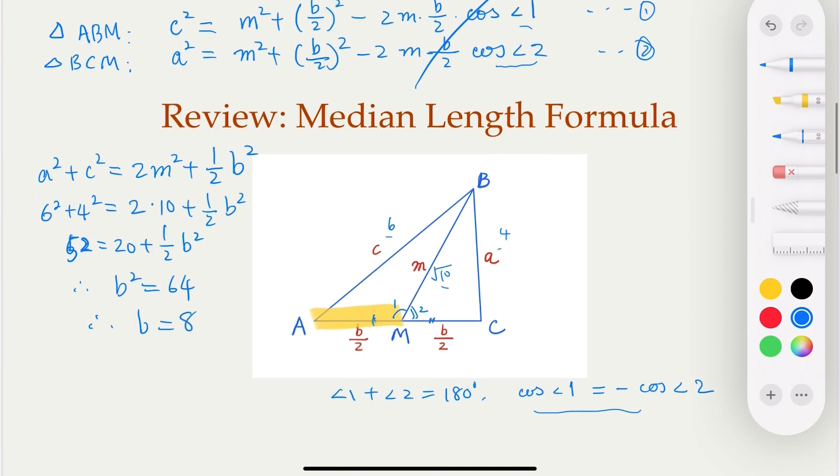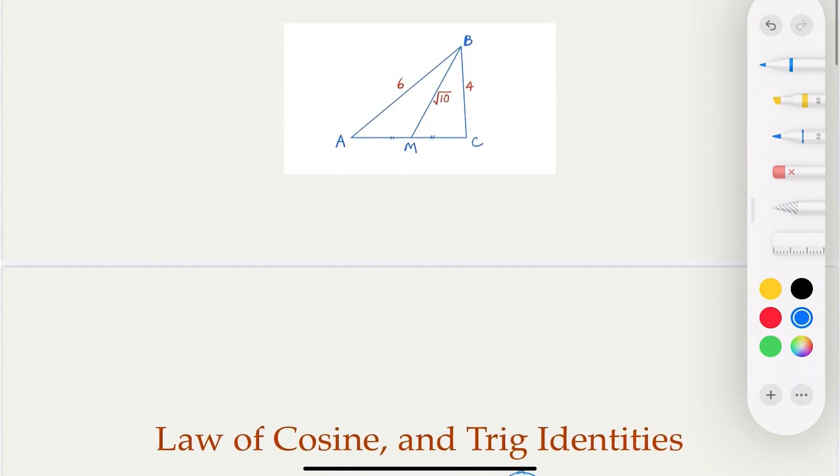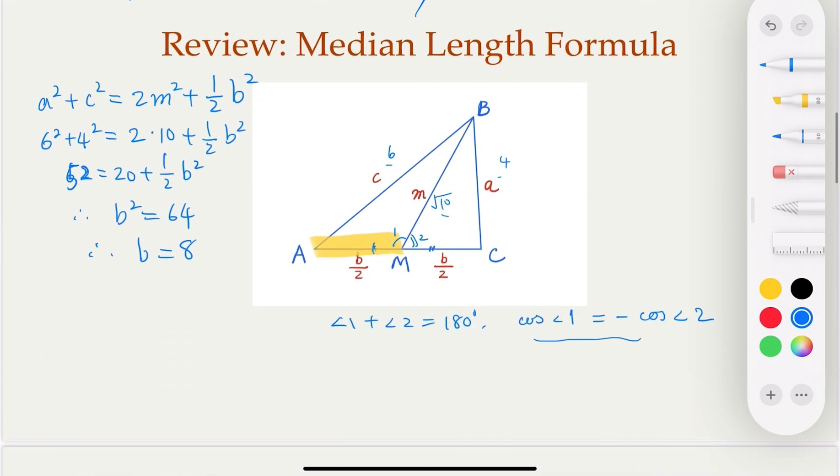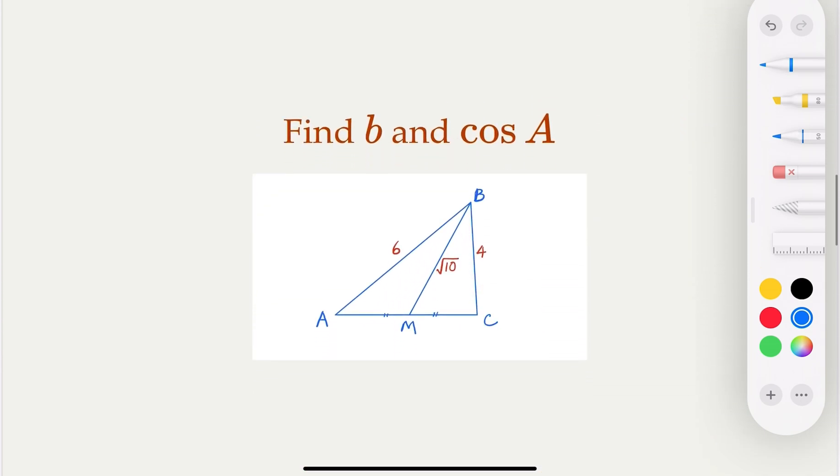So now, since we need to find out cosine half of A, so it's good to find out cosine A. So how do we find cosine A here in this triangle? So we need to, b, we already find it as 8. So this whole length is 8. So here, what is cosine A? Again, we're gonna use law of cosine here for the big triangle, in the big triangle ABC. In order to find out cosine A, so what you do is, you're gonna find, this here would be 4 square.